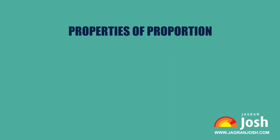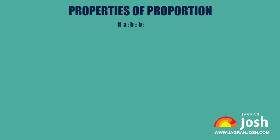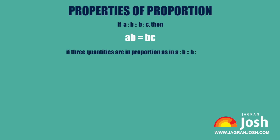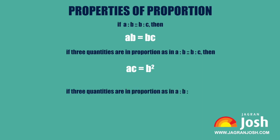Properties of proportion: the product of extremes is equal to the product of means — if A is to B and B is to C, then AD equals BC. If three quantities are in proportion as in A is to B and B is to C, then AC equals B squared, where B is the mean proportion to A and C, and C is the third proportion to A and B. Also, if A is to B and B is to C, then AC is to C squared equals A squared is to B squared.